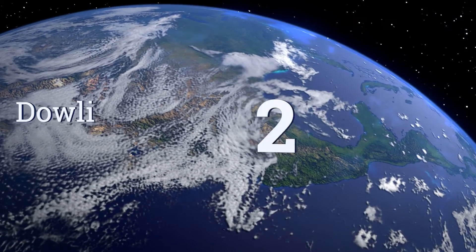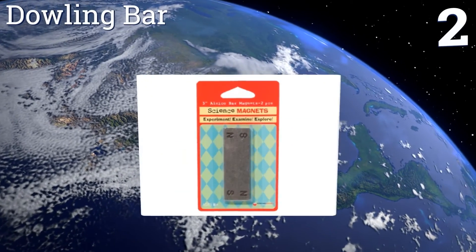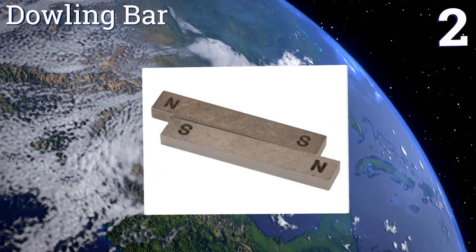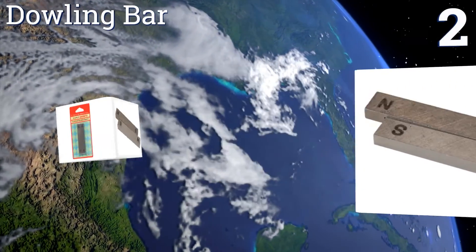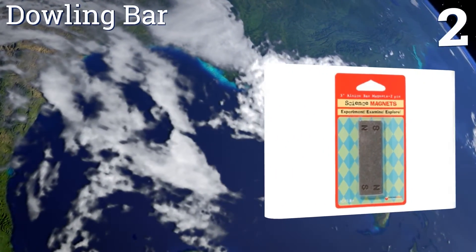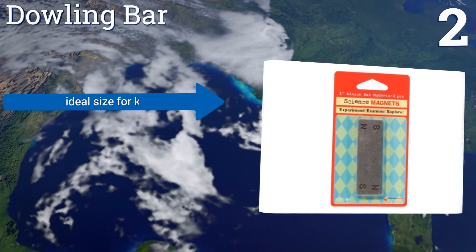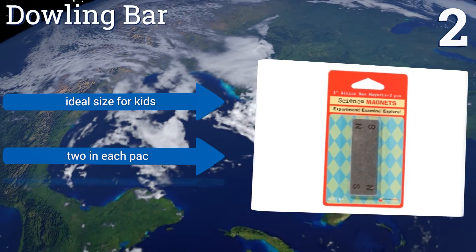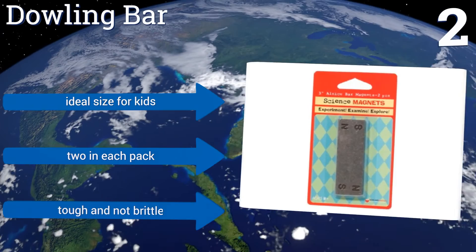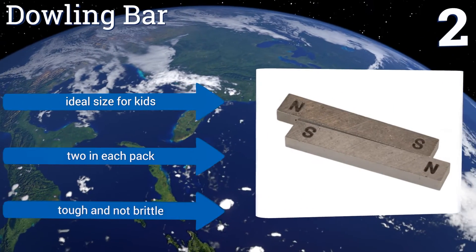At number 2, with the north and south poles clearly indicated on it, the Dowling Bar was made with education in mind. The strength is perfect for children to experiment on paper clips or other light metallic objects while learning about lines of force. It's the ideal size for kids and you get two in each pack. They're tough and not brittle.